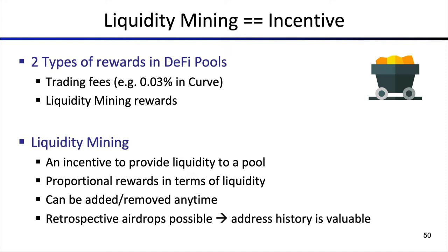There are two types of rewards in DeFi protocols, and they are mainly trading fees. If you're a liquidity provider, also called an LP, and you provide assets into a pool — a pool of assets X and Y — you remember the example of Alice, and then there's Bob who's trading and who will provide a small fee to the liquidity pool.